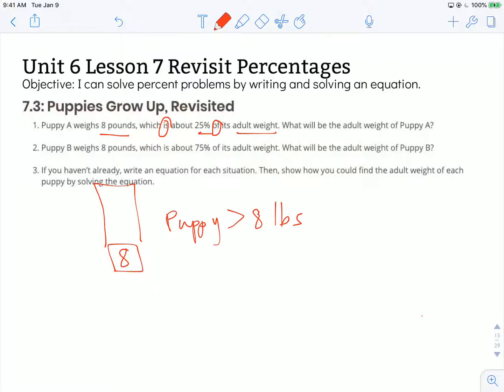So I can create an equation if I substitute some of these important words with mathematical symbols that we know. So is is the same thing as an equal sign. And of indicates that we're going to do multiplication. So 8 pounds is equal to 25%, so I can write that as a fraction or as a decimal. 25 out of 100, so I'm going to write that as 25 hundredths.